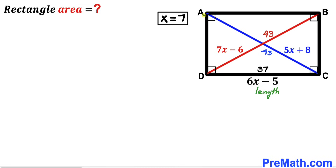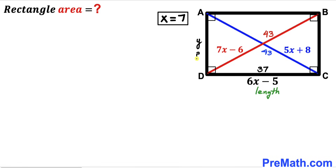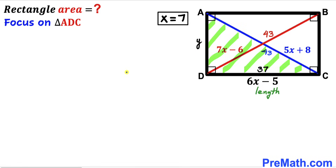Our next task is to calculate side AD, which is the width of this rectangle. We will label this side as Y and solve for Y. We are going to focus on right triangle ADC and apply the Pythagorean theorem to solve for Y.